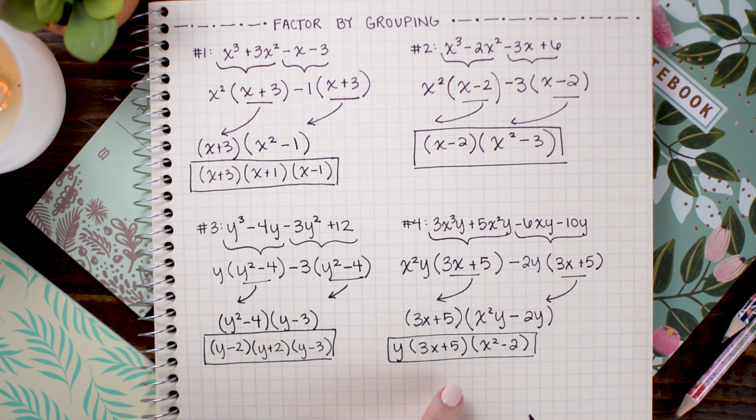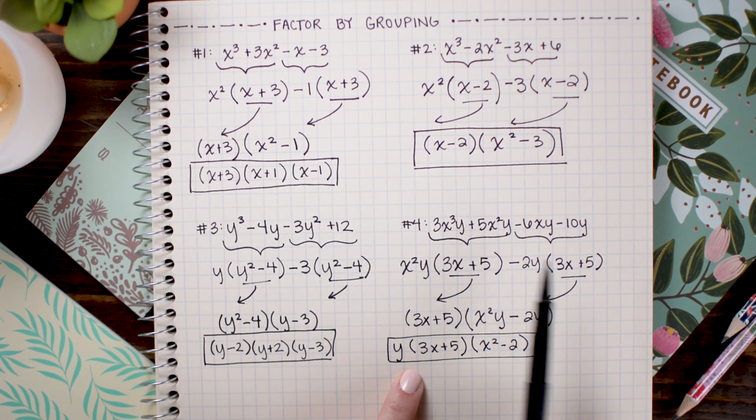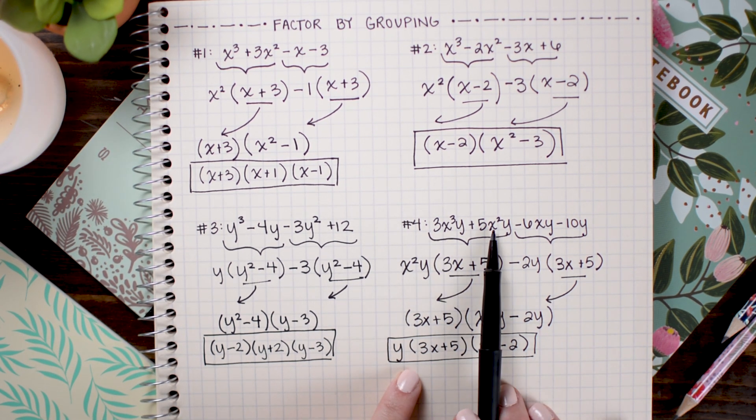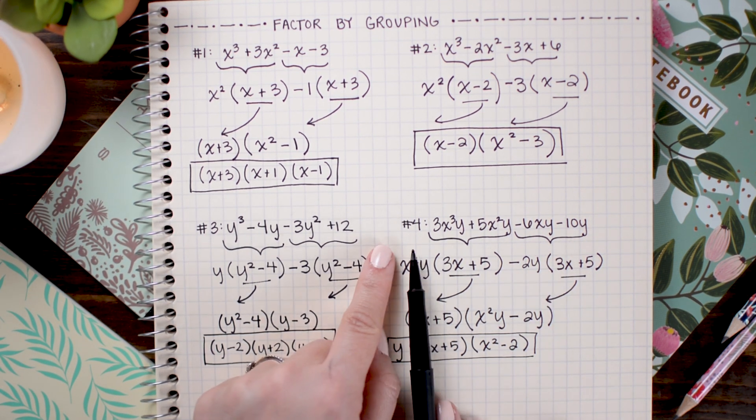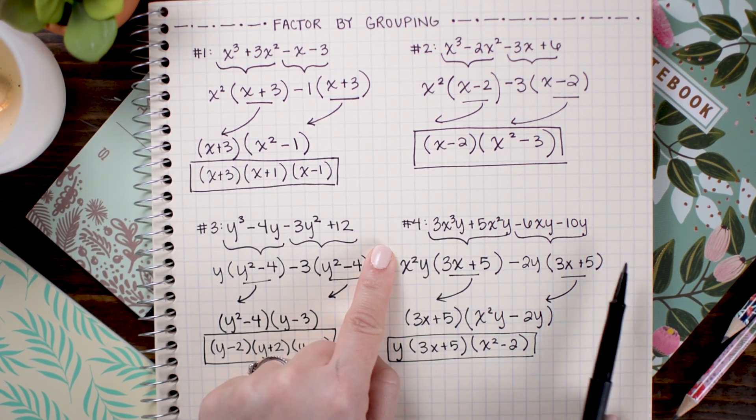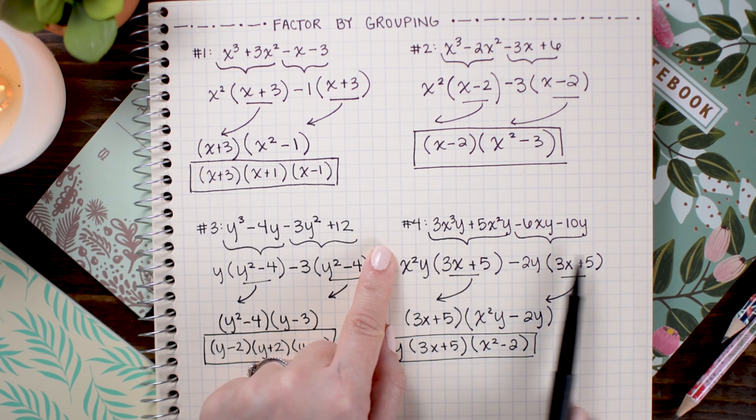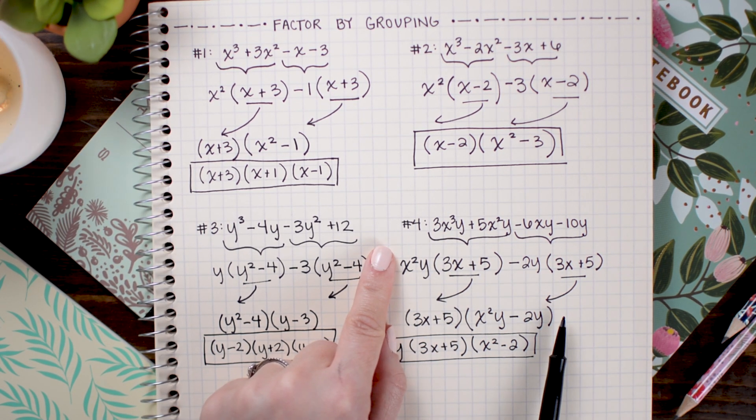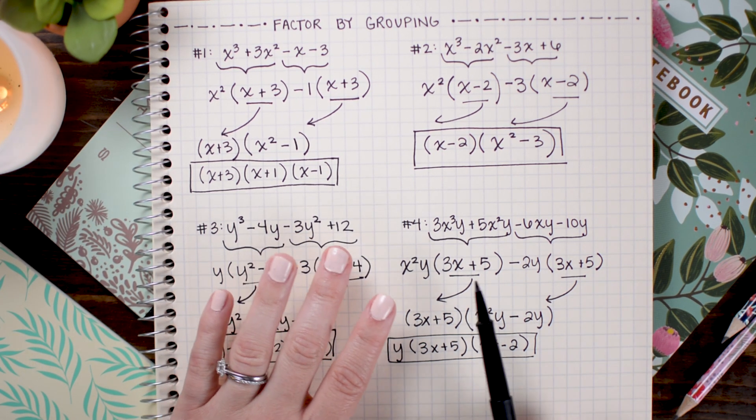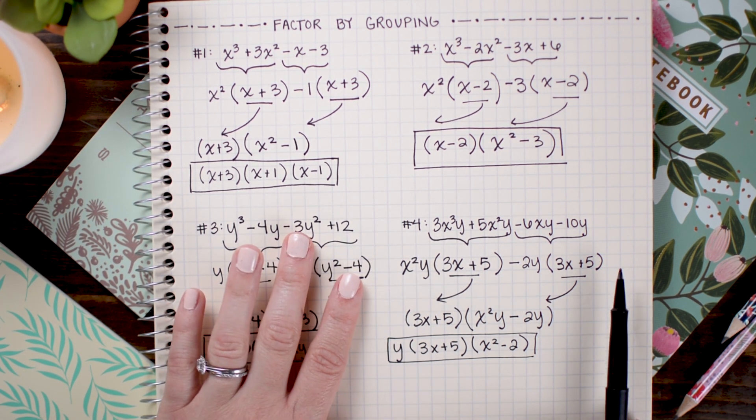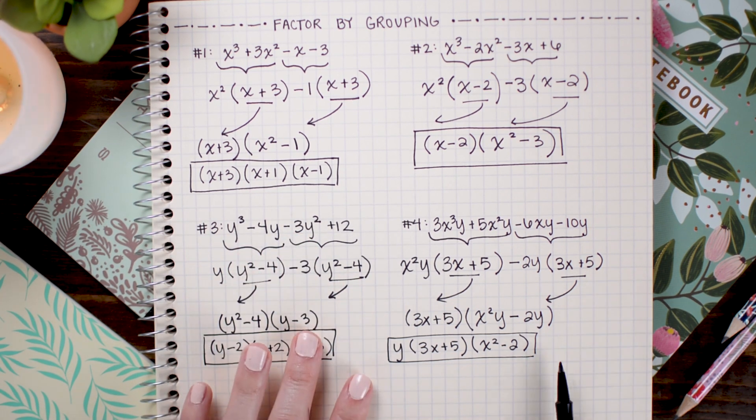You may have noticed that at the beginning of this problem, I could have began by pulling out a common factor of y, since there was a y in all four terms. Had I done that, I would just have a y out in front, and I would do all of the factor by grouping work inside the parentheses. I think it's a little bit more confusing to do it that way. So, that's why I chose to just do a normal factor by grouping here, and at the very end, pull out that y.